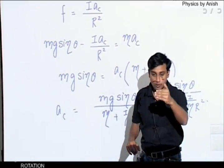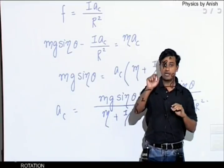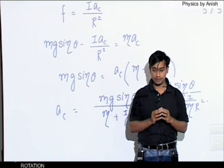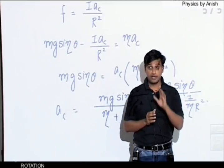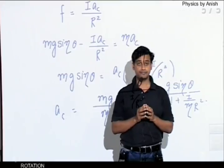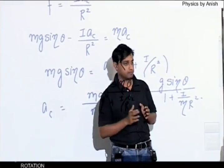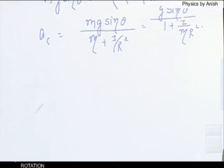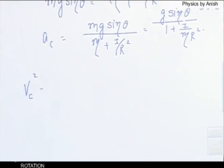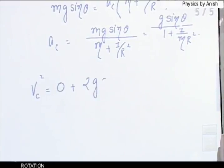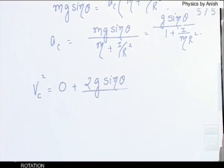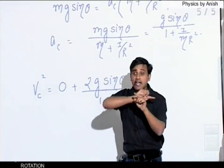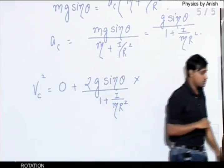Alright students, write this down. First write: what is the velocity of center of mass? What is the velocity of center of mass at the bottom? Note that the length along the incline is not h, that is h upon sin theta — h upon sin theta.